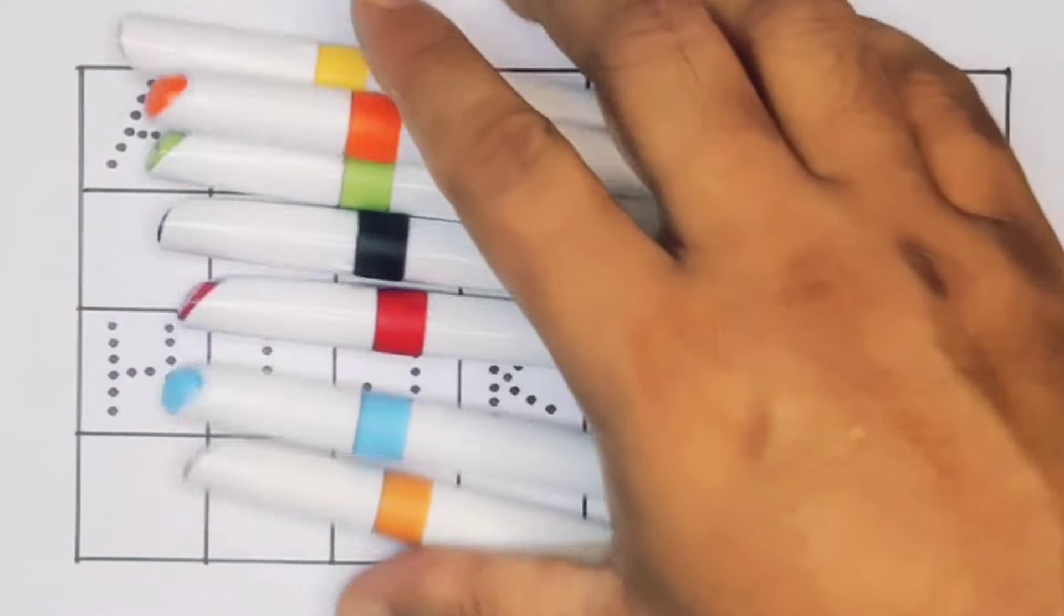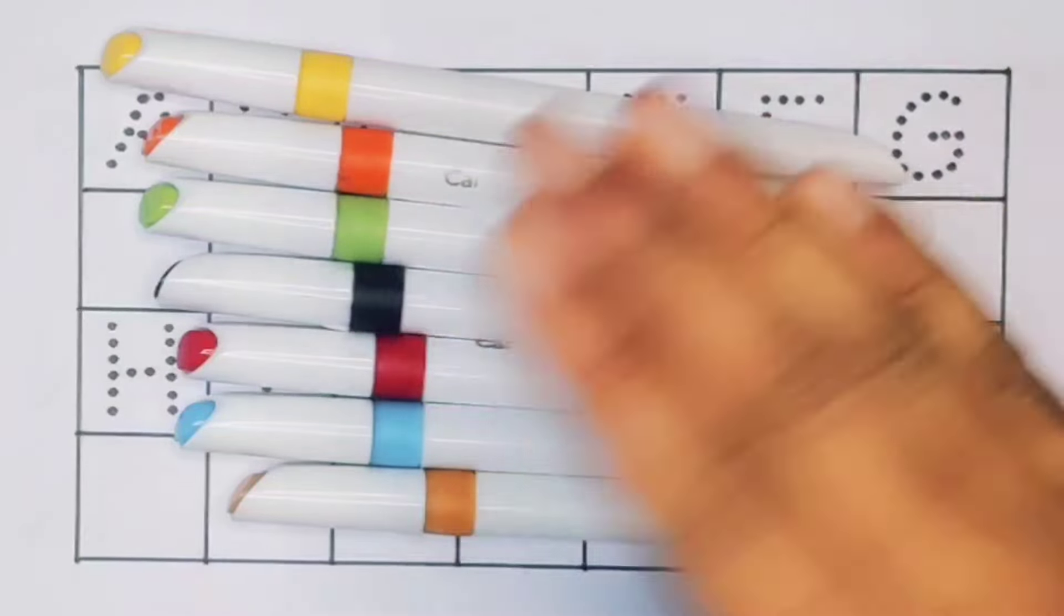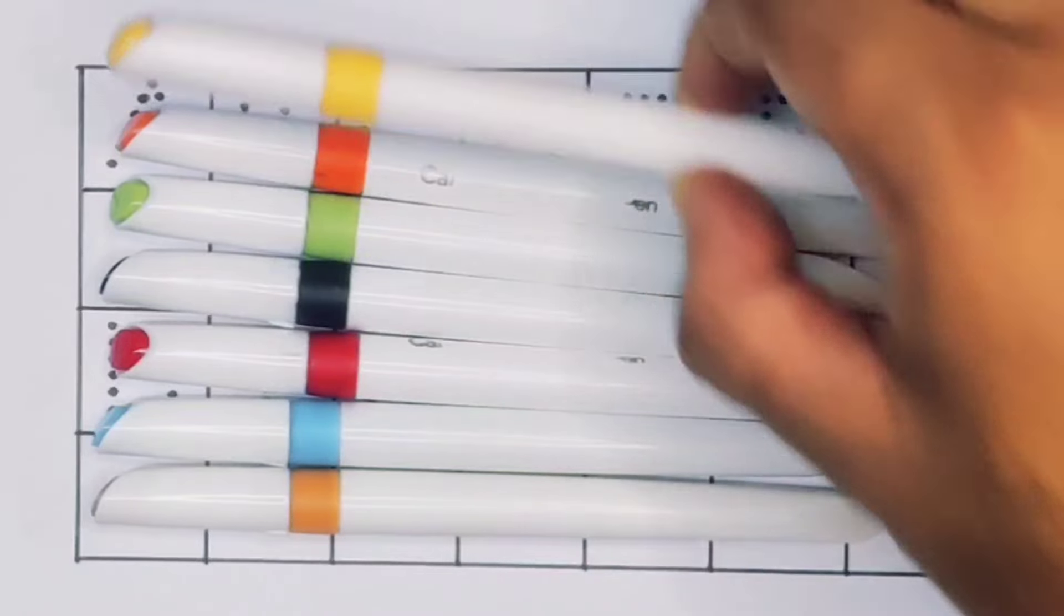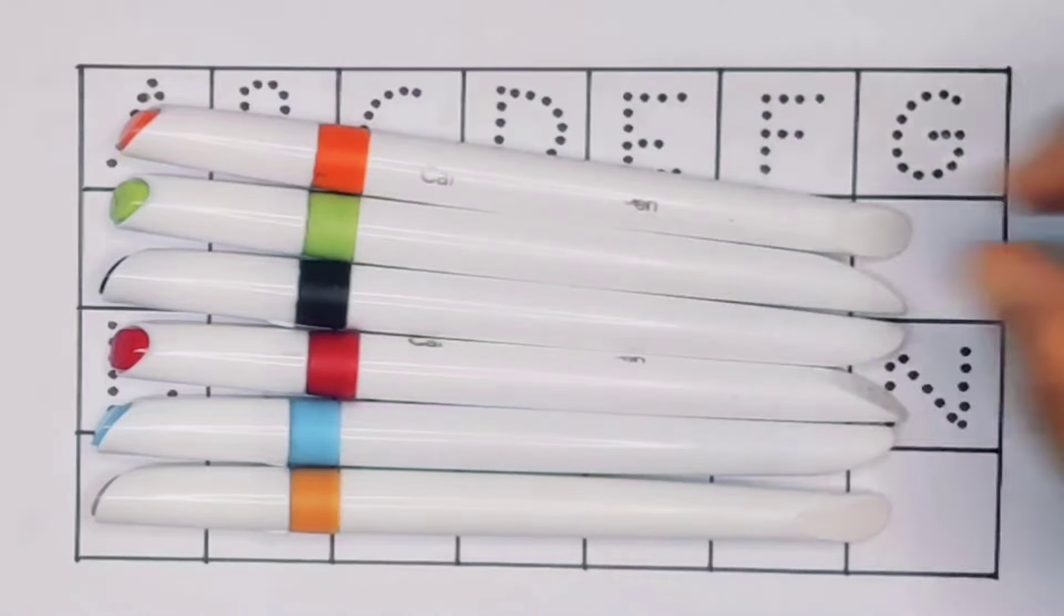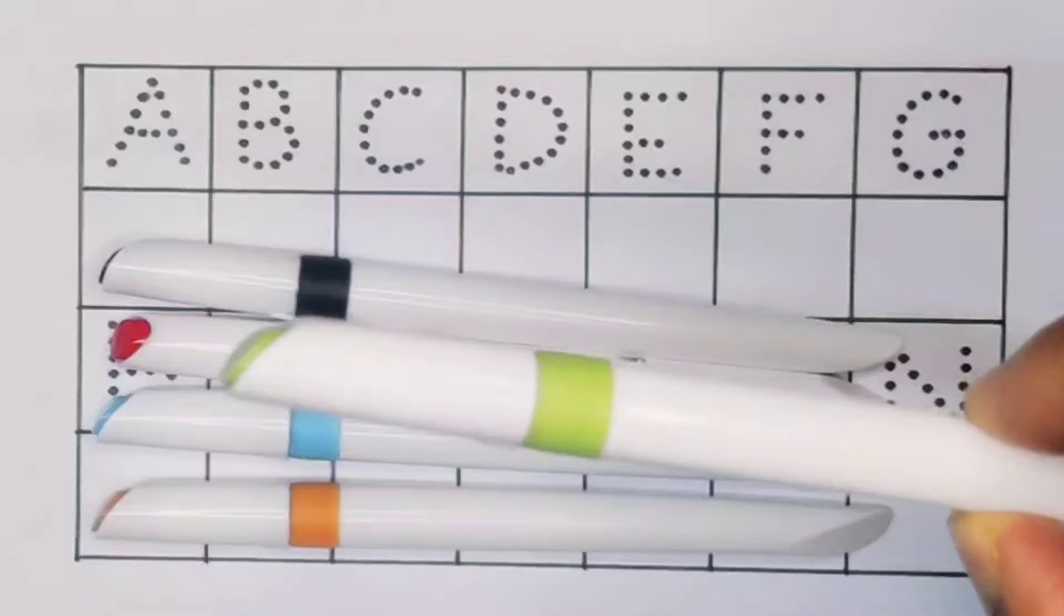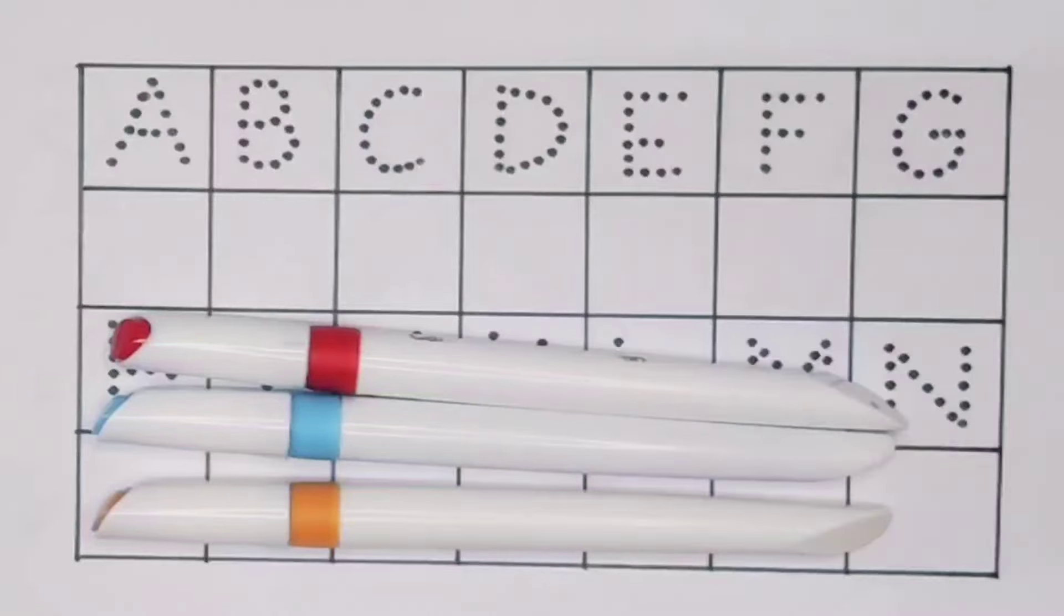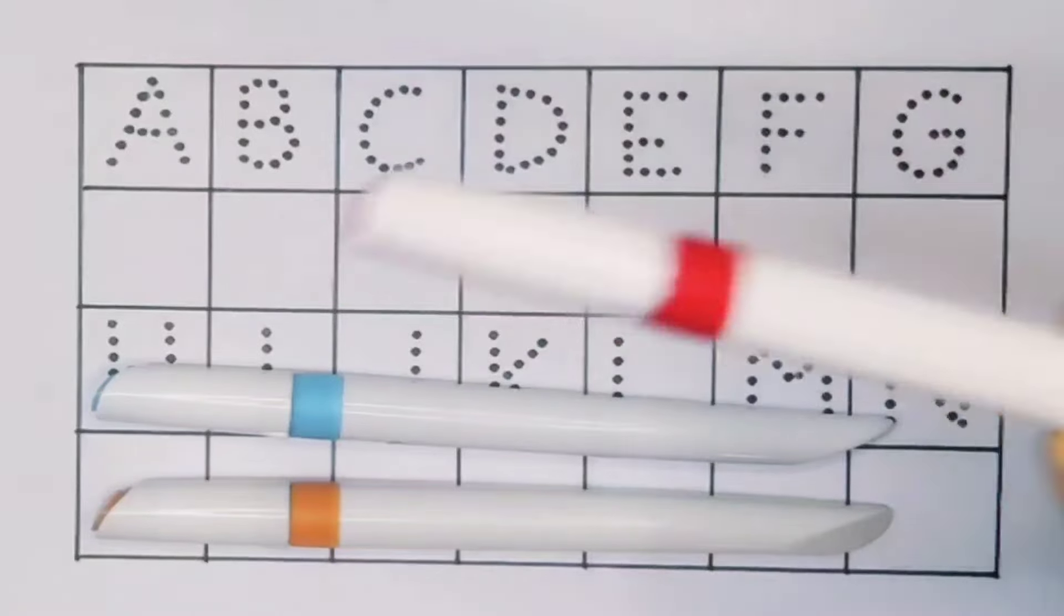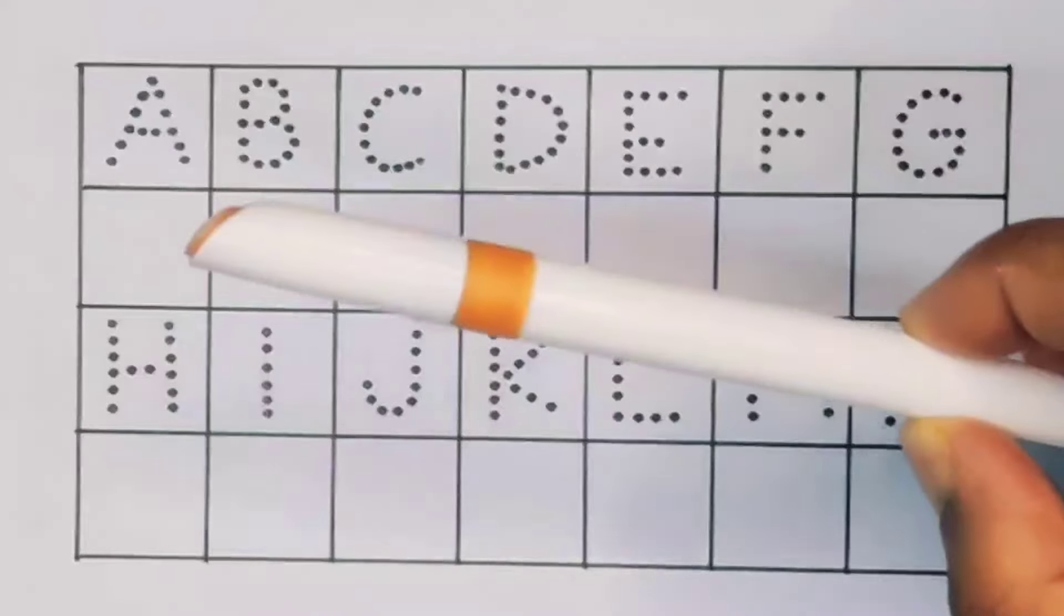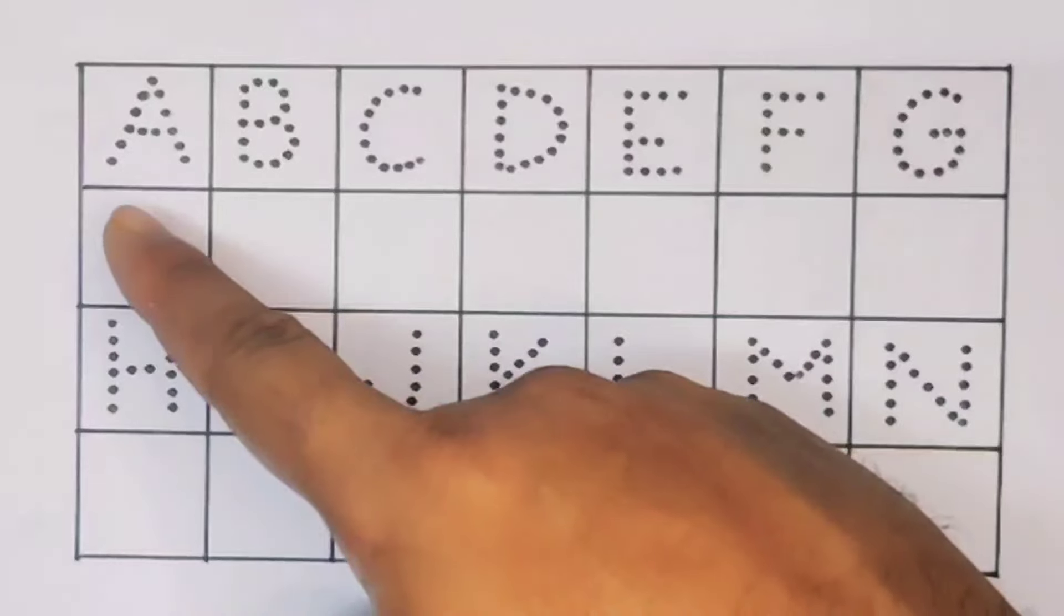Hello kids, welcome to my new video. First, we're going to know the colors: yellow, orange, light green, black, red, sky blue, brown. Now let's learn the alphabet.